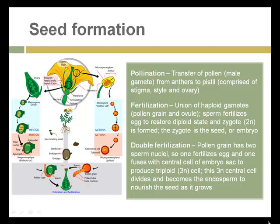Another review slide discusses pollination, fertilization, and double fertilization — these are the critical steps in going from one or more parent plants to seed formation.